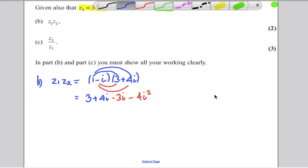Do remember i squared is negative 1. So therefore this term here, negative 4i squared must be 4. Because negative 4 times negative 1 must be positive 4.